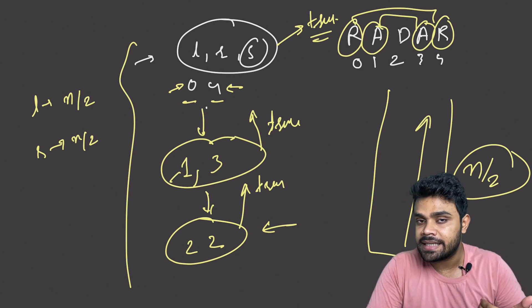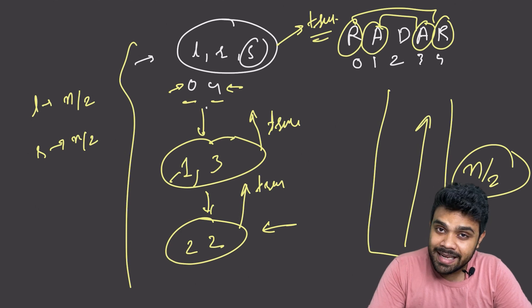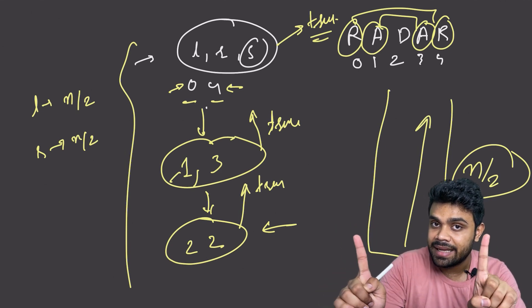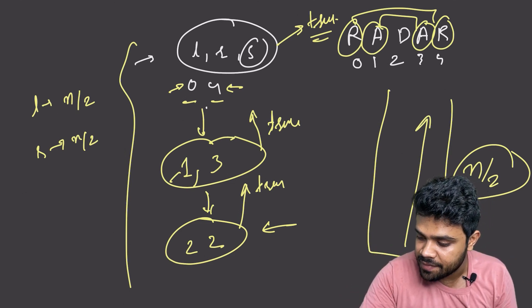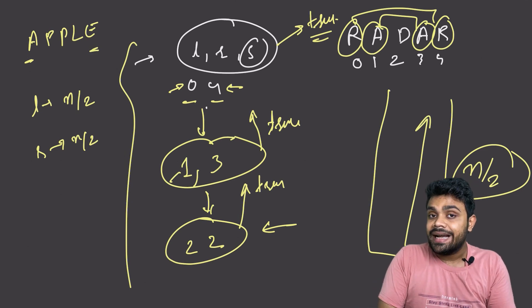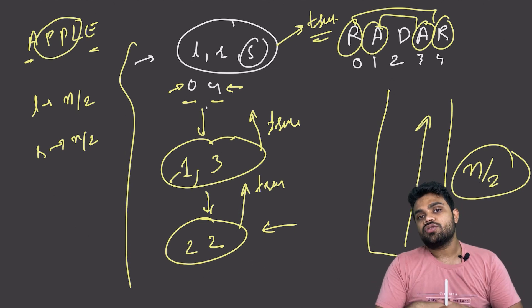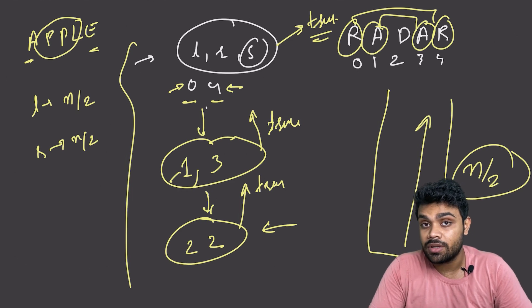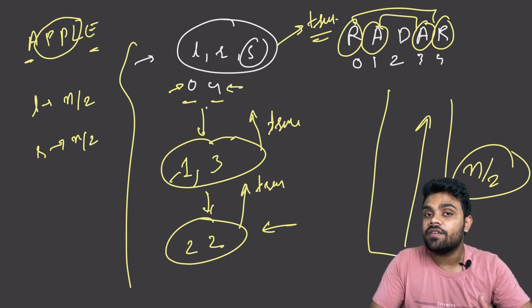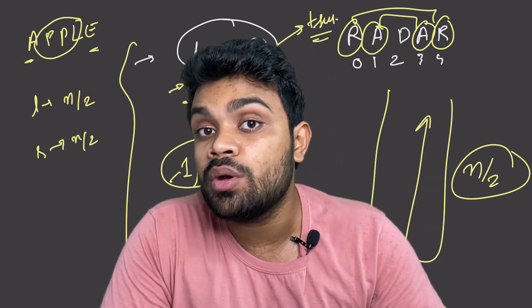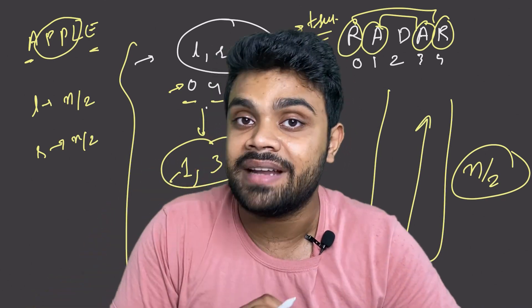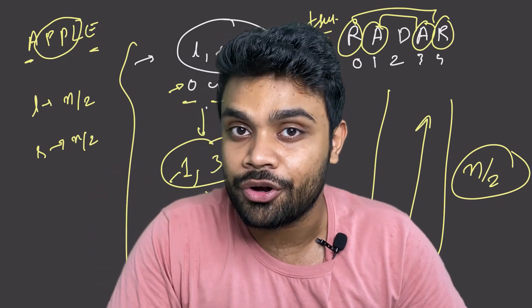In the best case, there is only one function call — for example with 'apple', the first and last characters are not equal so we return false immediately without exploring further. But we care about the worst case, which is O(N). If you have any doubts, watch the video again or mention them in the comment section — I will try to clarify. Also mention whether you liked the video. See you in the next video!